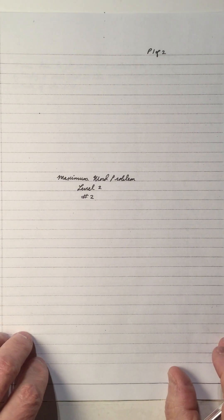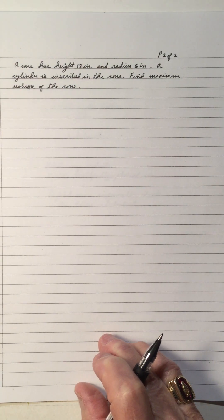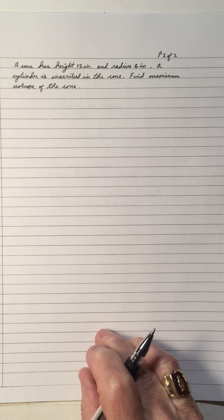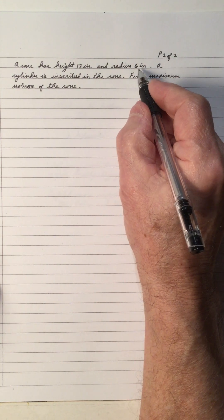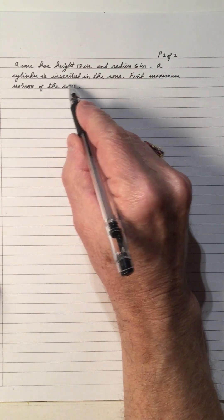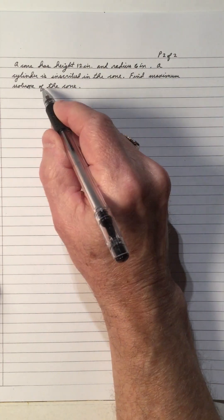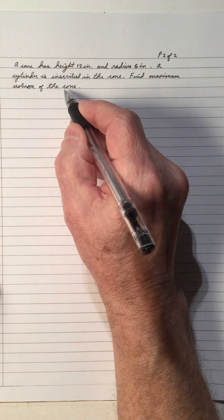Hi, welcome to my video on the maximum word problem level 2. This is the number 2 video on maximum word problems. A cone has a height of 12 inches and a radius of 6 inches. A cylinder is inscribed in the cone. Find the maximum volume of the cylinder.